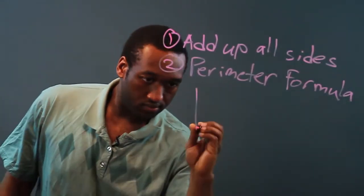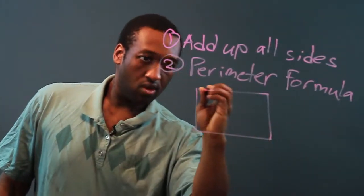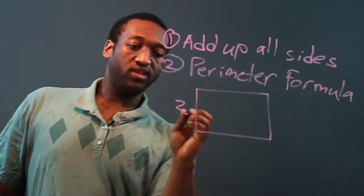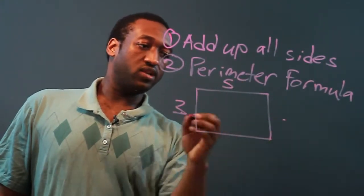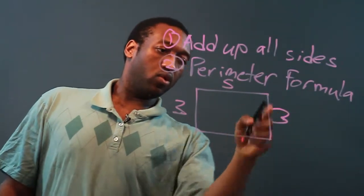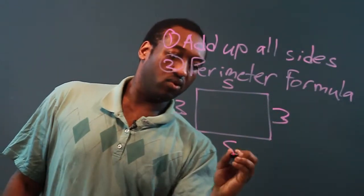Let's say I have a rectangle, and let's say the width is three and the length is five. Now, for a rectangle, opposite sides are equal, so this width will also be three, and this length will also be five.